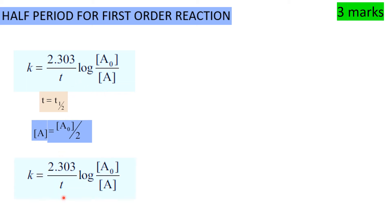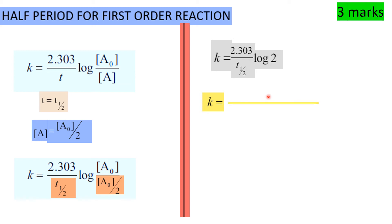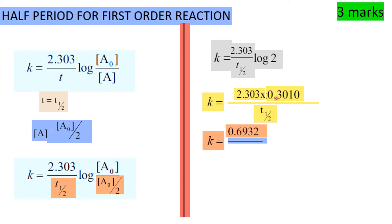Substituting into the equation: k equals 2.303 divided by t½ times log(A0 divided by A0/2), which gives k equals 2.303 divided by t½ times log 2. Since log 2 equals 0.3010, we get k equals 0.6932 divided by t½, so t½ equals 0.6932 divided by k.